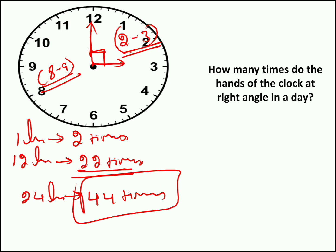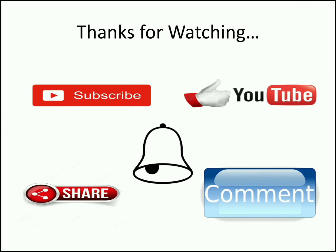Understanding these shortcuts is mandatory for solving bigger problems. Sometimes you will get questions like: how many times do the hands form a right angle in 144 hours or 1728 hours? In those cases we use the same shortcut approach. If you understand these shortcuts, solving clock problems becomes really easy. In the upcoming session I will add more difficult problems on clocks — until then, stay connected with Carry Deep Training Solutions. If you have any doubts, please comment below. Like and share the video with your friends. Thanks a lot for watching. Have a nice day.